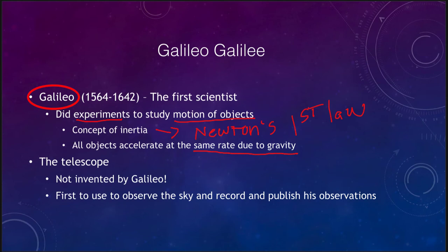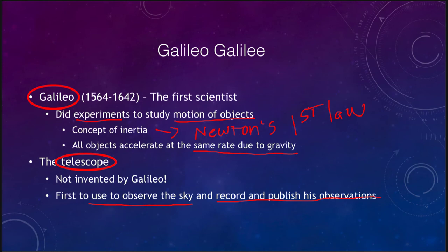Galileo also used the telescope. He did not invent the telescope, but he was the first to use it to observe the sky that we know of, and certainly to record and publish his observations. So he gave us the first telescopic observations of solar system objects and objects outside our solar system. He didn't invent it — it was actually invented a year or two before — he heard about it, was able to make a telescope, and then use it to look at the sky.